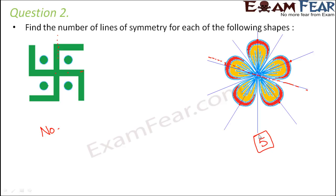So whenever you have to find the number of lines of symmetry, closely observe the figure and try to analyze from where you can draw a line such that the figure gets divided into two equal halves. In this case there are five petals, so you draw a line dividing it into two and a half petals on each side — and that is what we did using the five lines.